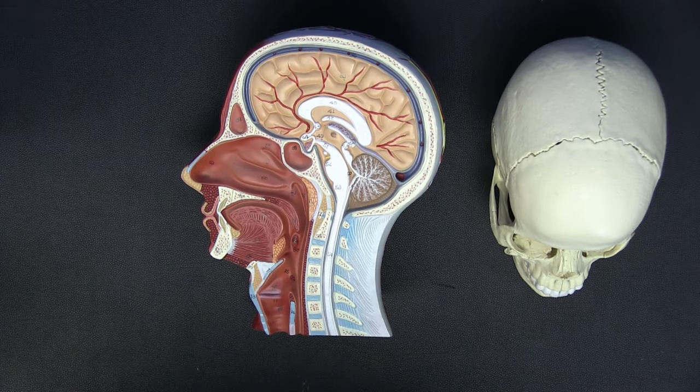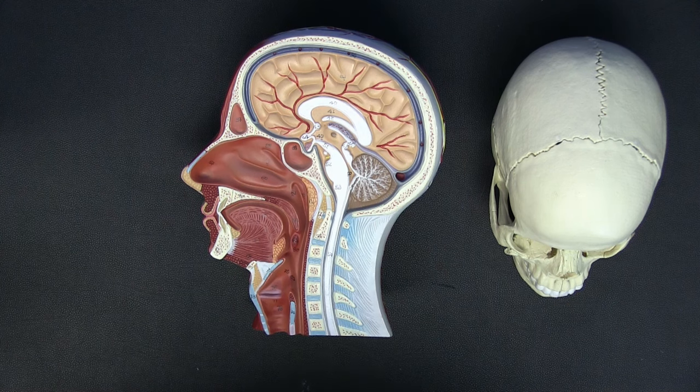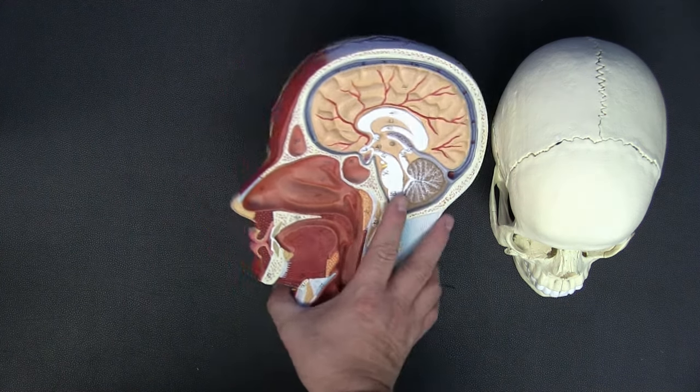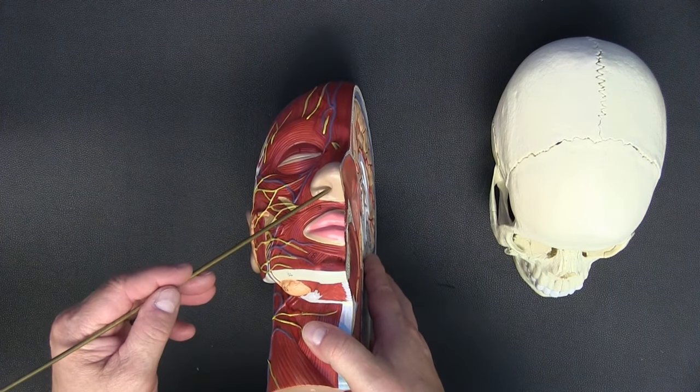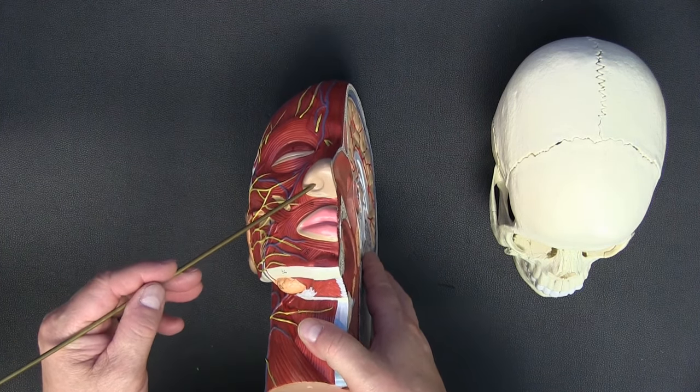To discuss the respiratory system, we actually have to start at the very beginning, not in the thorax or dealing with the lungs, but with the head and neck. The very first part of our system where we're going to start bringing air in is the nares or nostrils.